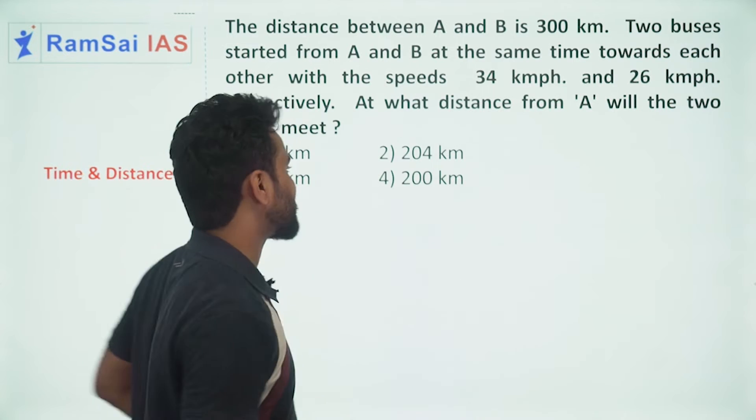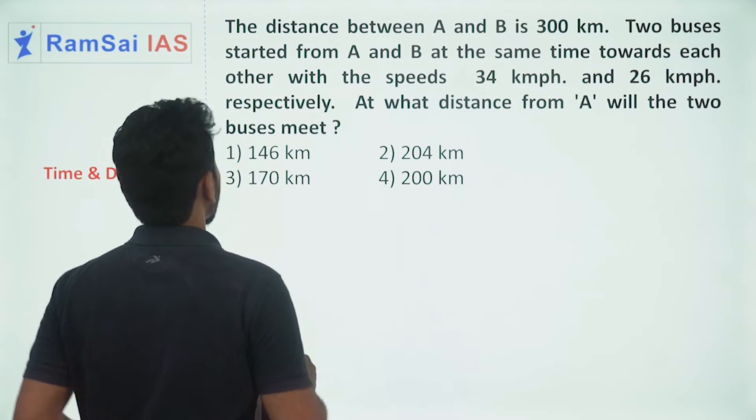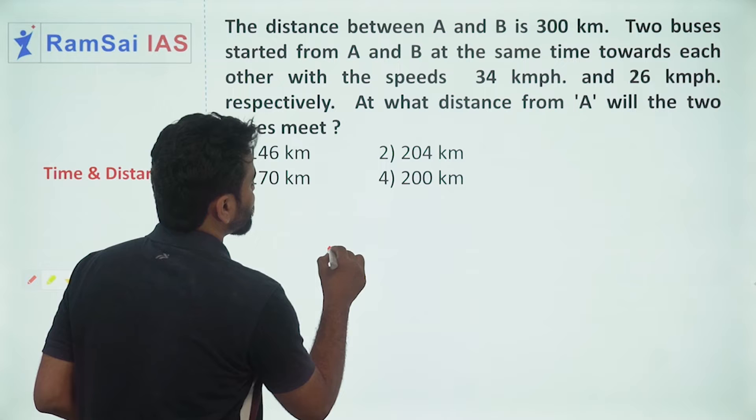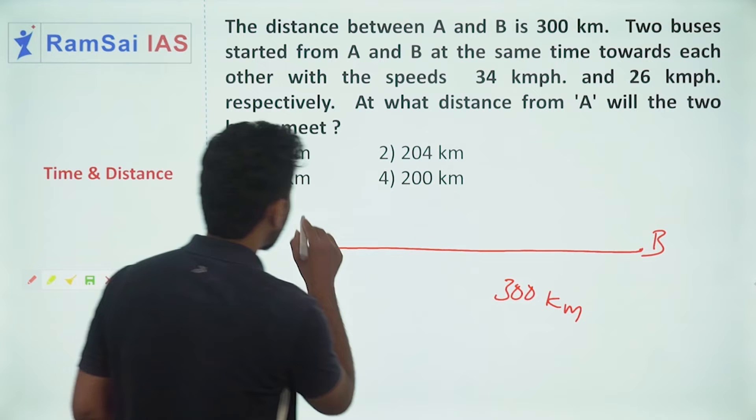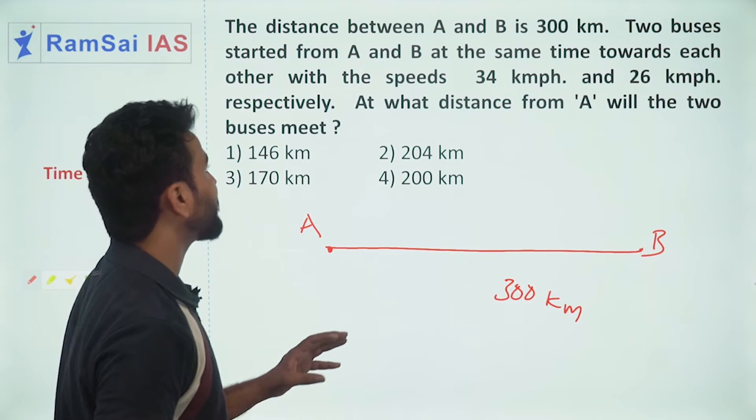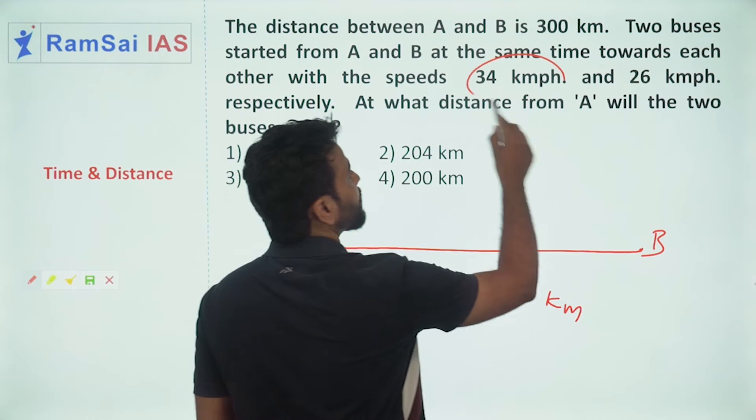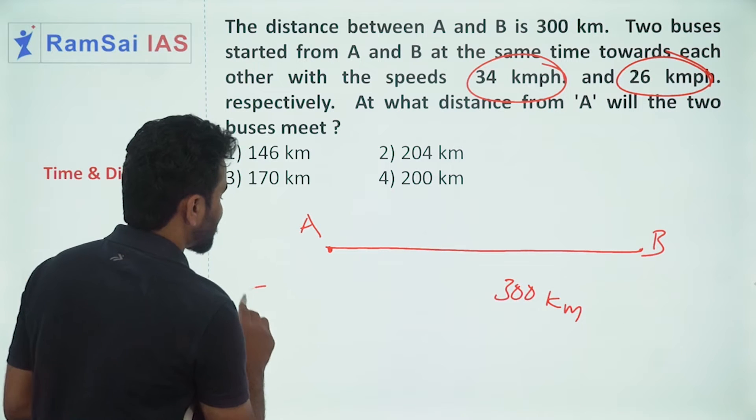Let me solve this. We have two places A and B which are 300 kilometers apart, and two buses are traveling at speeds of 34 kilometers per hour and 26 kilometers per hour.